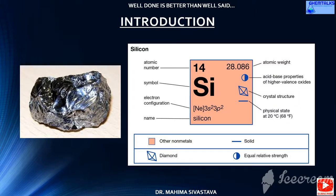To study organosilicon compounds, it will be better to have a slight introduction of the element considered for the formation of this organometallic compound, that is silicon. Silicon is the second most abundant element in earth's crust, making up about 25 percent or more of it. It is a metalloid and a semiconductor, and it very rarely occurs in pure elemental form in nature. Widely, it appears as a compound, whereby the most important compound of silicon is silica, which is SiO2, and this element was discovered by Berzelius.